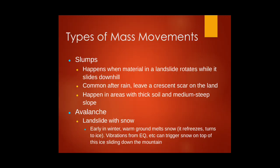Slumps occur when material in a landslide rotates while sliding downhill, common after intense rainfall of 24–48 hours. The heavy rain seeps into the slope, increasing the load and reducing the friction resistance of the soil, resulting in mass movement. Avalanche is a landslide with snow — triggered by snowfall or surcharge of snow weight.